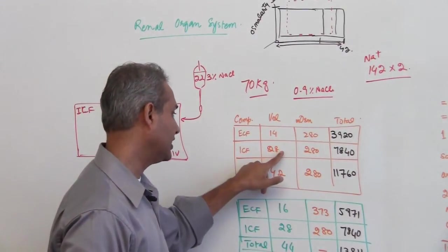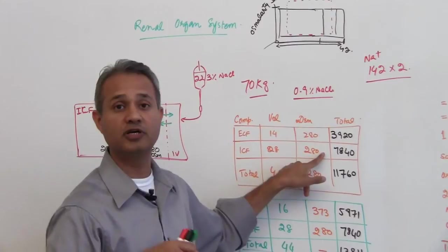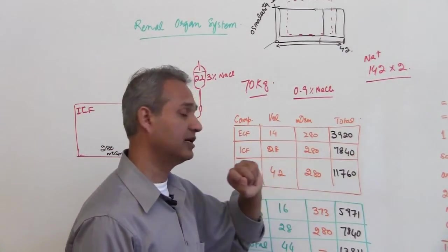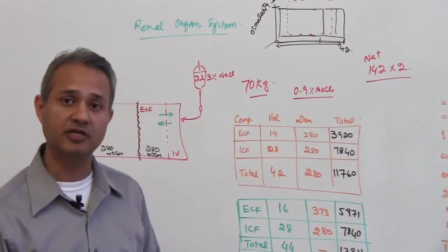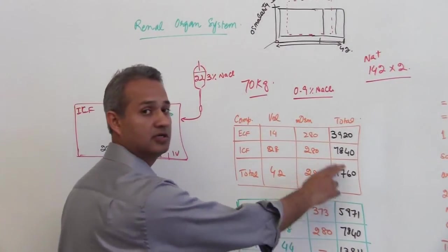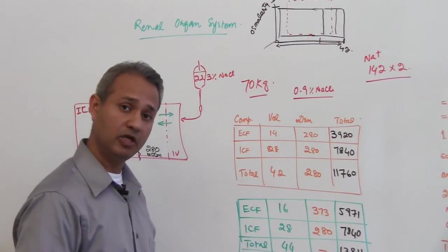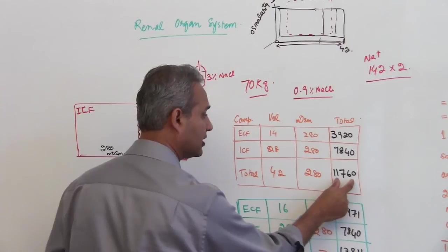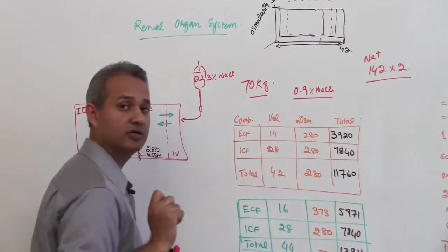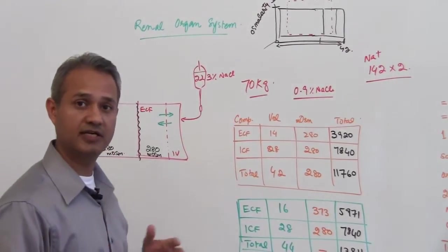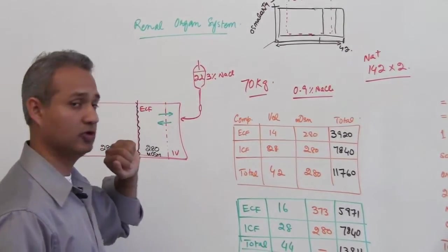Similarly you multiply 28 liters with the osmolarity of 280 milliosmoles per liter and that is the total milliosmoles present in the intracellular fluid and this is your total milliosmoles. So frankly what you have to do is you have to pick up this osmolarity divided by this and you would get this number. So this is the healthy state normal state before giving the 3% sodium chloride.